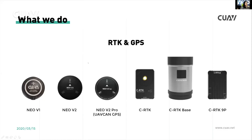We also make GNSS modules: the Neo V2, Neo V2 Plus, CRTK, and CRTK Base. These are our new GPS products. The Neo V2 GPS integrates a safety switch and RGB LEDs. The difference is that the Neo V2 uses a standard UAVCAM GPS chip, while the CRTK and CRTK Base use a higher-grade chip. The CRTK 9P integrates high performance for RTK applications.